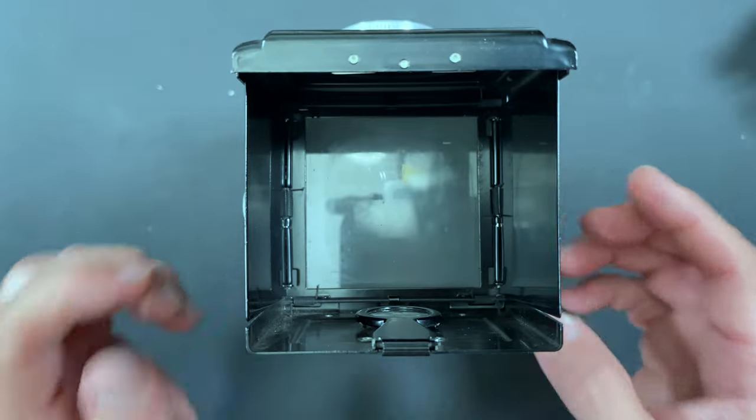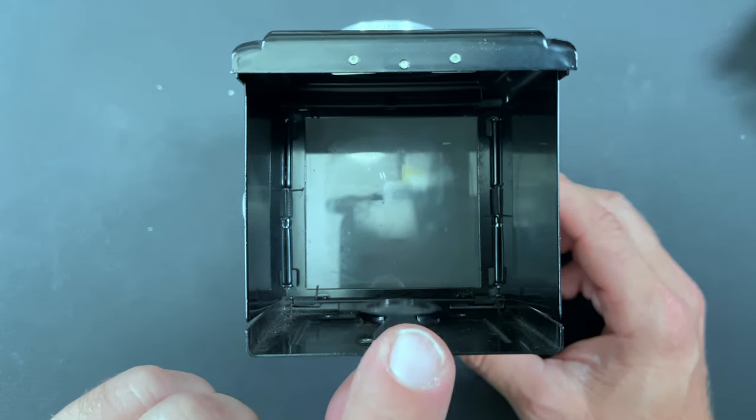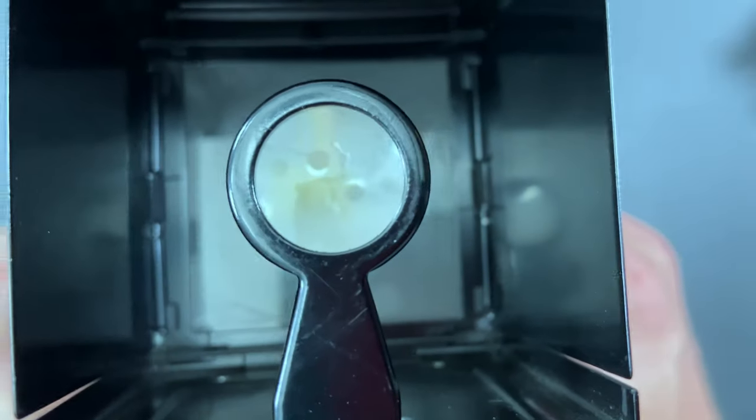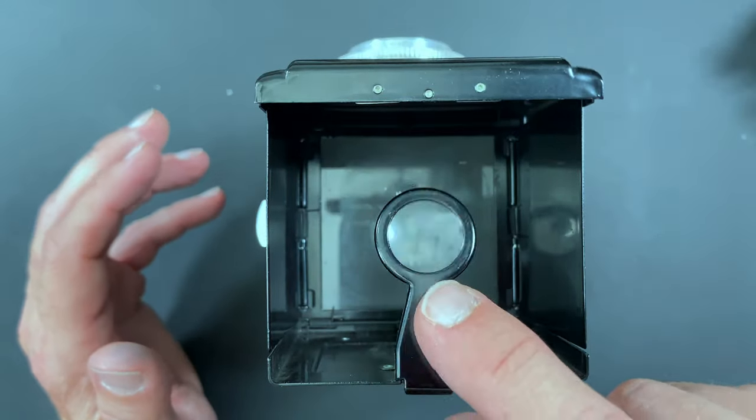So this would be waist level. If you wanted to put your eye right down on it, it also has a little magnifier. So you can get right down in there and get your picture nice and sharp.